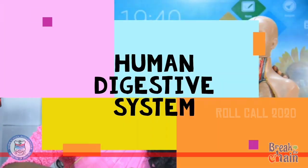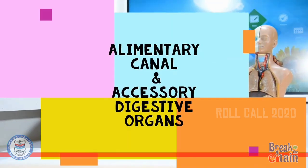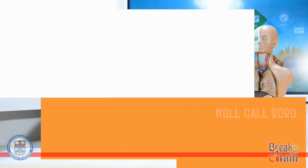These are the organs involved in the human digestive system. It is comprised of the alimentary canal and the accessory digestive organs.